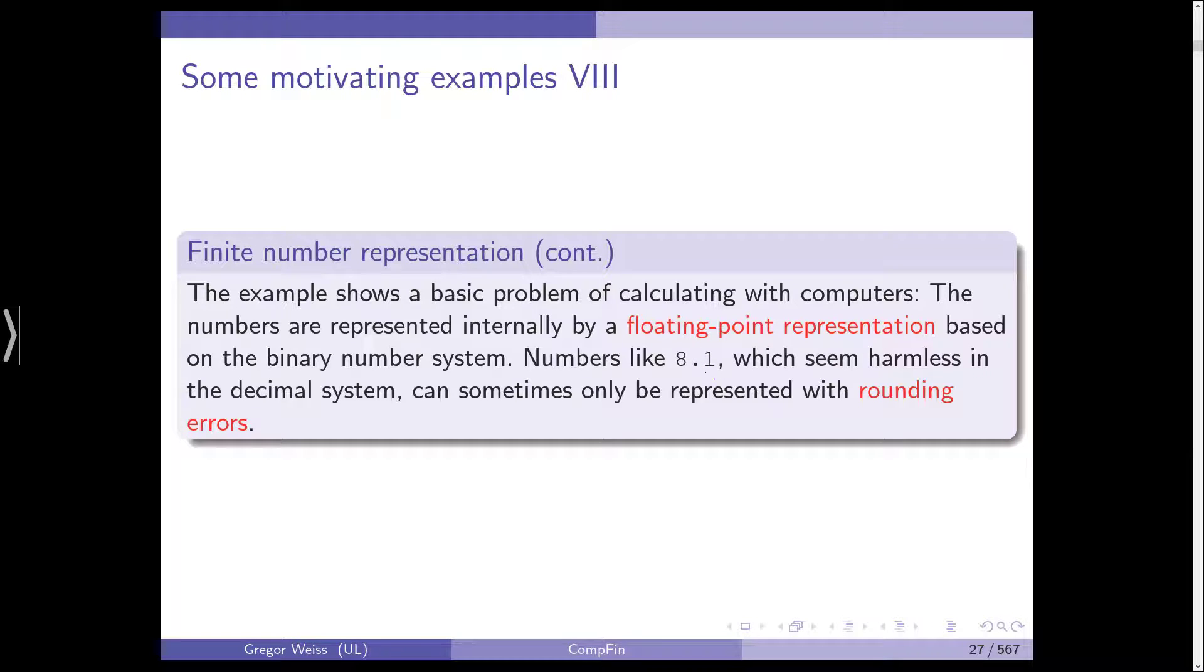And numbers like 8.1, they are finite in the decimal system, but they are actually, in this case, 8.1 at least is, it's infinite in the binary number system. So, if the computer works with 8.1, it works with an infinite representation, and at some point it has to cut some decimals off, and then we get a rounding error.